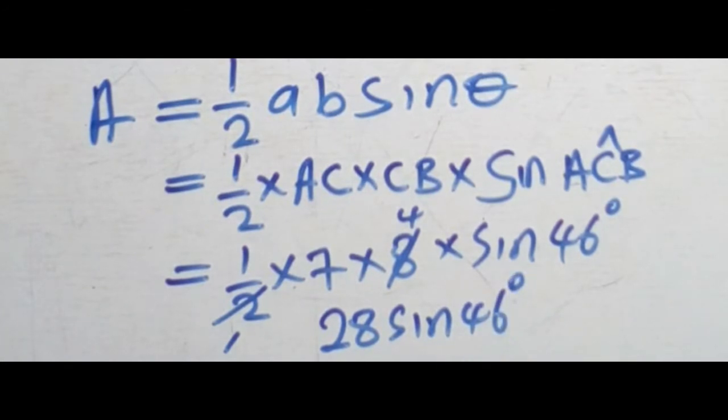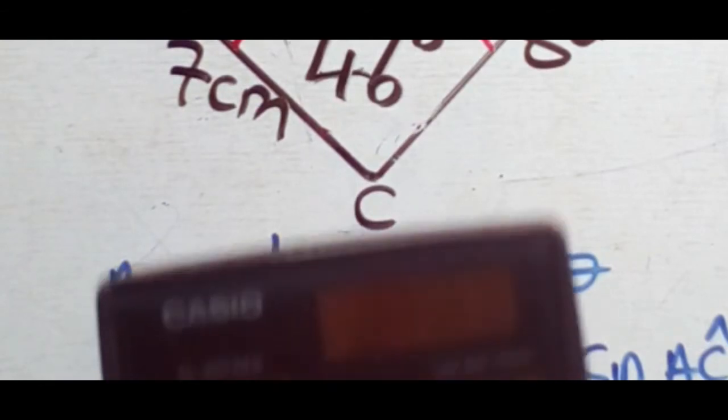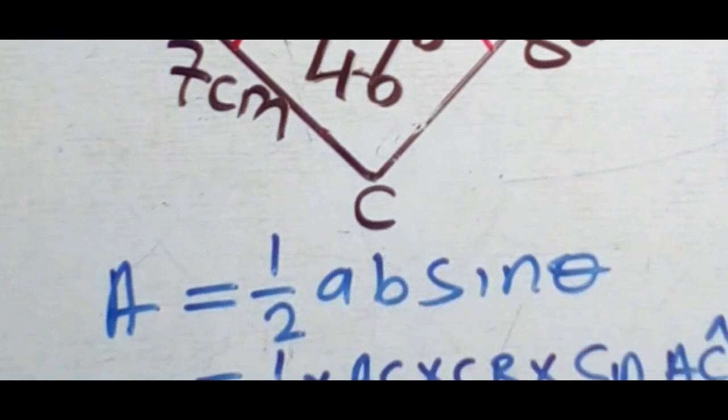At this point, you just need to get a scientific calculator and press them the way they appear. So you say 28 sine 46. This angle is in degrees, so make sure that your calculator also is in degrees. And you say equals. The answer is going to be displayed.